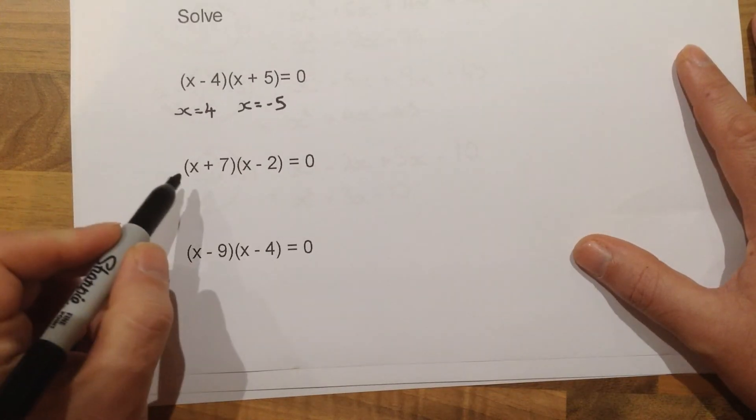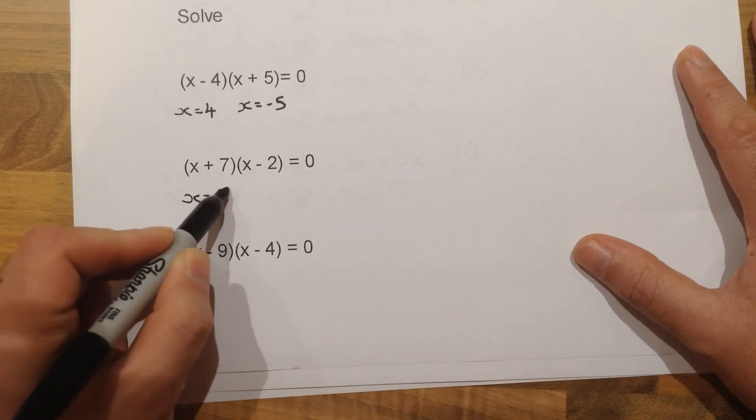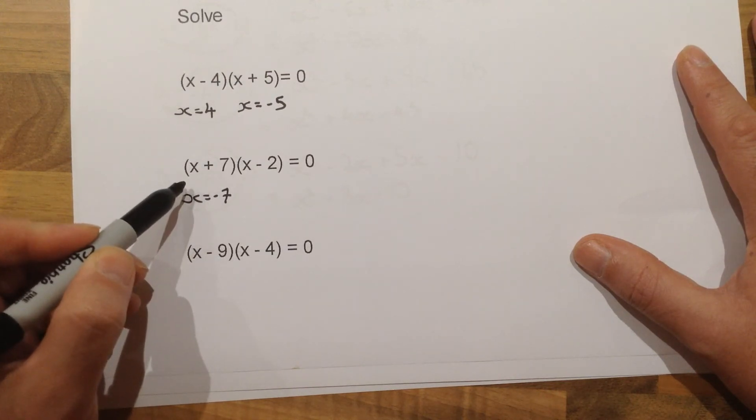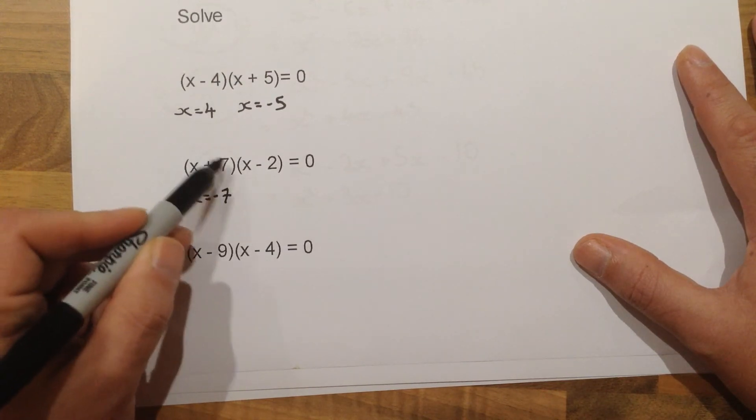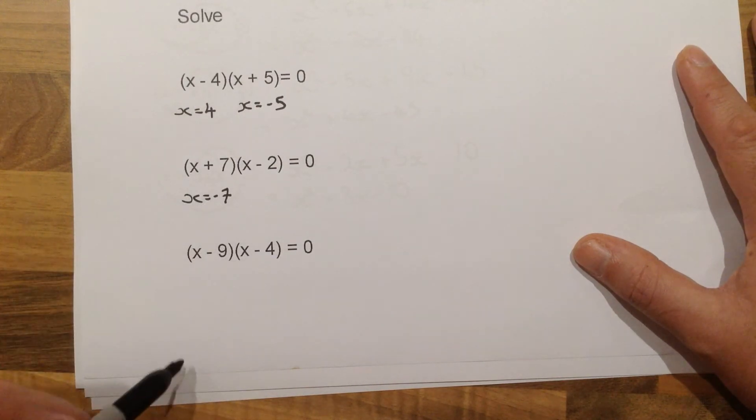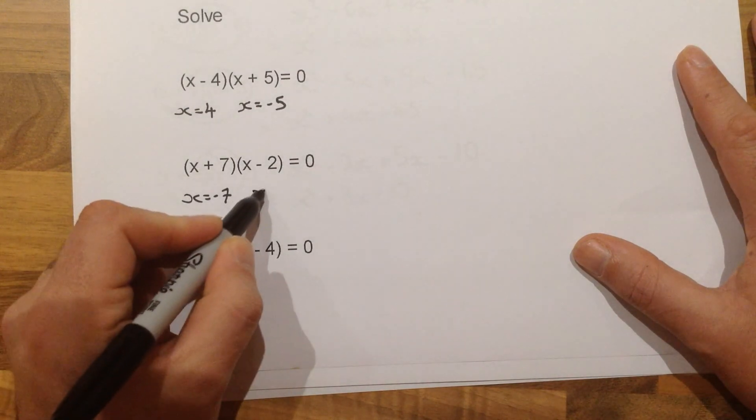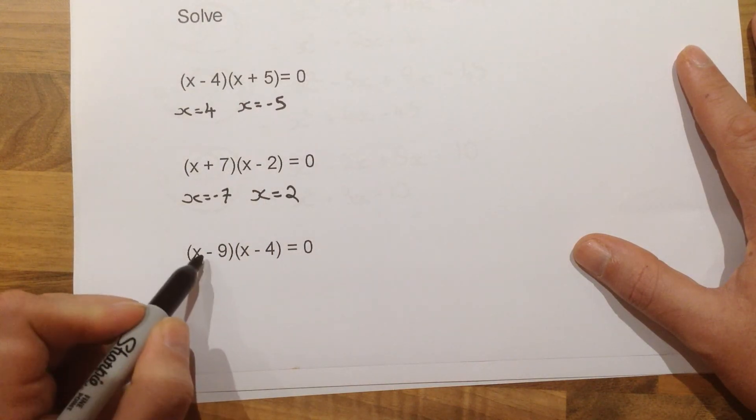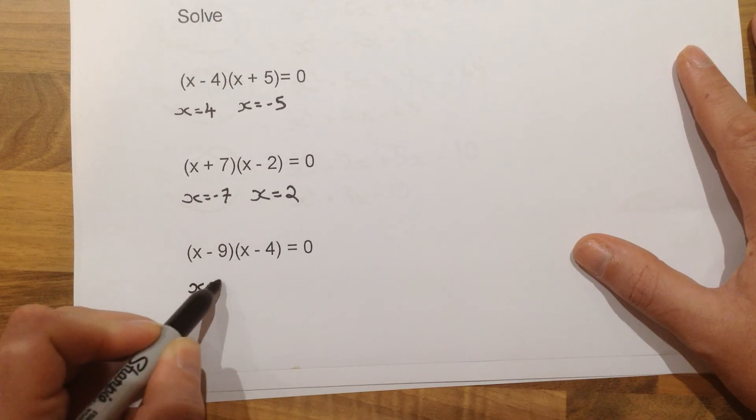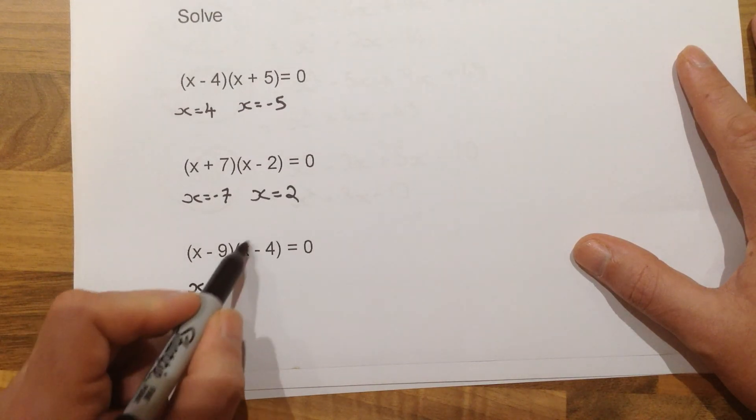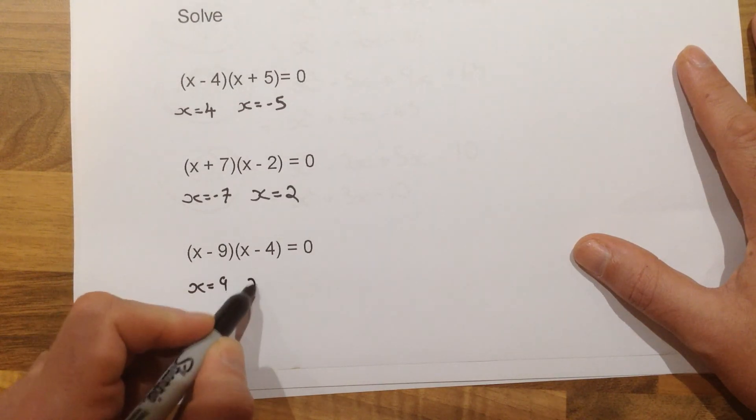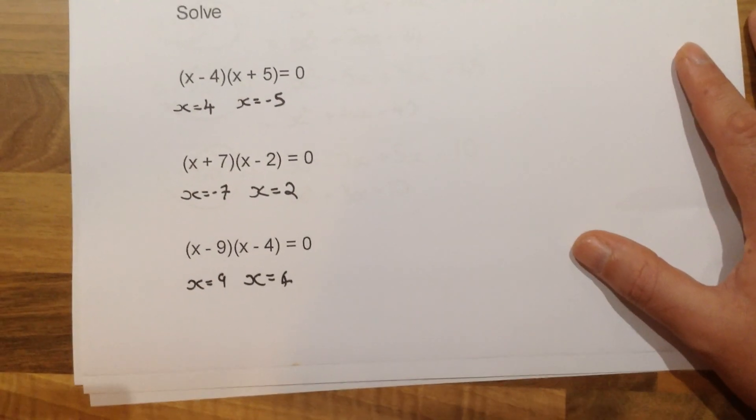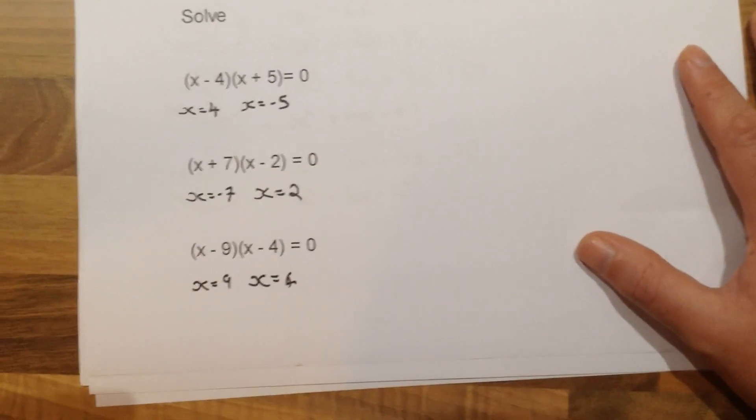Same goes for the next one. X would need to be minus 7. We can do this quite quickly, because the values, the solutions, are simply the opposite of whatever is in the bracket. Here, plus 7, so minus 7. For this one, X equals 2. Opposite of minus 2. Minus 9. So we would need X to equal 9. Here, the bracket says X minus 4. So we would need X equals 4.